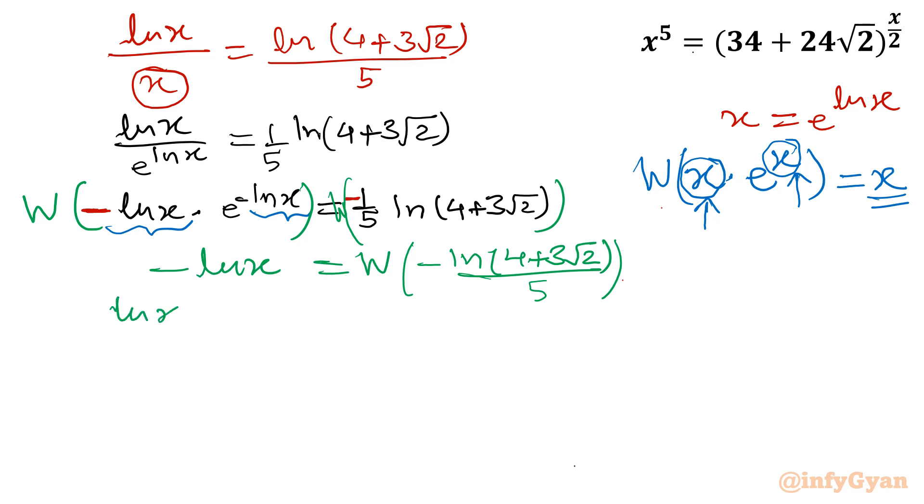Now I will multiply both sides with minus sign. It will become minus W of minus ln 4 plus 3 root 2 divided by 5. Now in exponential form, consider base e both sides. Or we can write from this equation also ln x would be x times ln 4 plus 3 root 2 over 5. I am writing directly: x is equal to e raised to the power minus W of minus ln 4 plus 3 root 2 over 5.